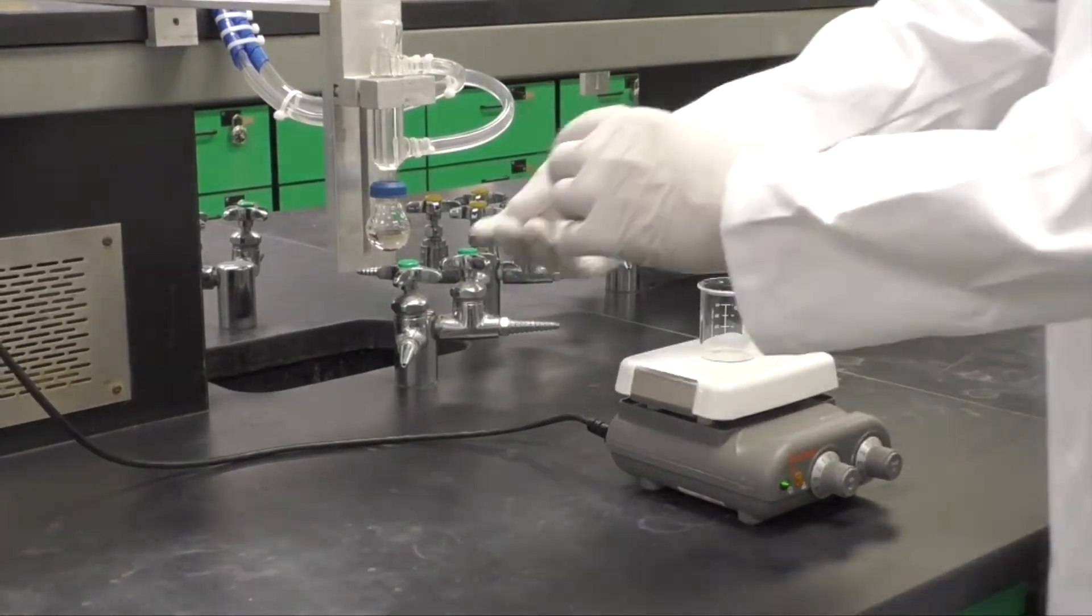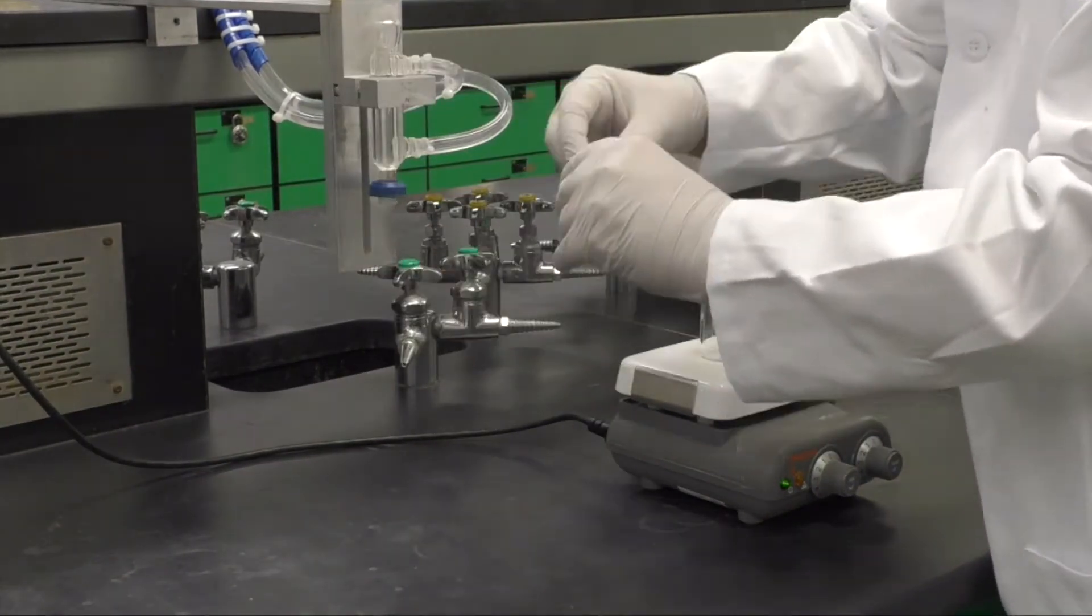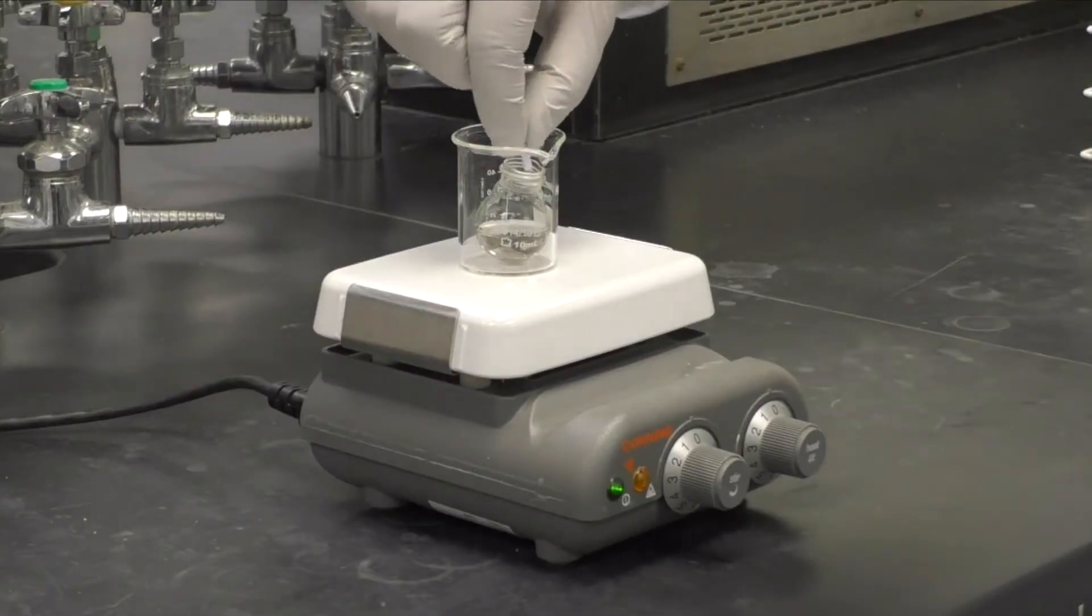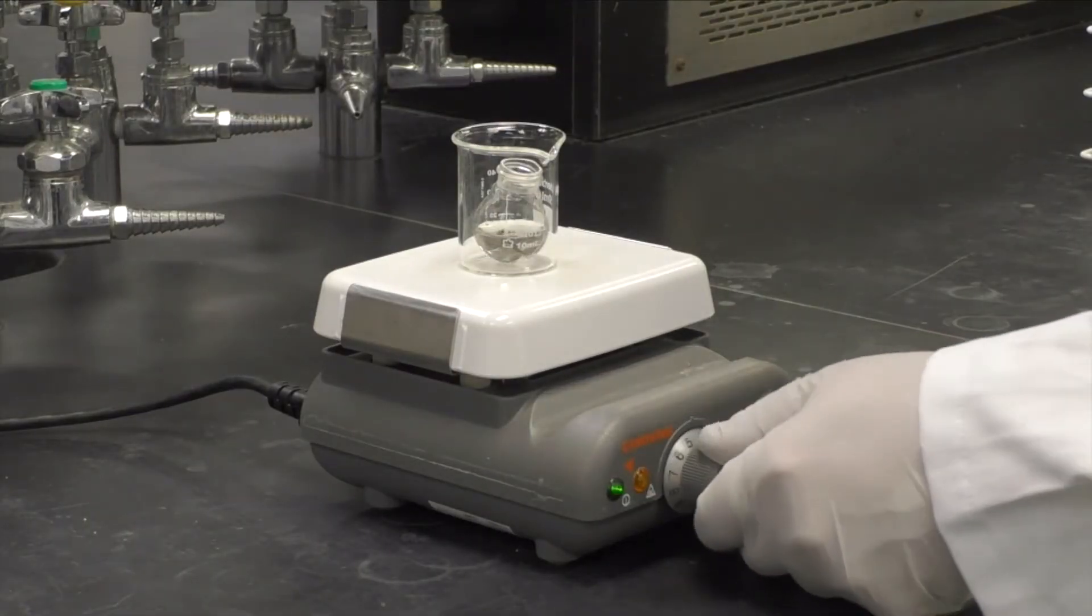Place the round bottom into one of the 50 ml beakers, put it on the hot plate stirrer, add the stir bar, and get it stirring at a rapid rate.